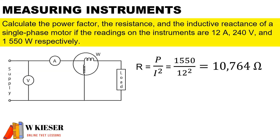To calculate the resistance, we utilize the formula: power is equal to I squared times R. So it's the power of 1550 watts divided by the current of 12 amps squared, and we end up with a resistance of 10.764 ohms.